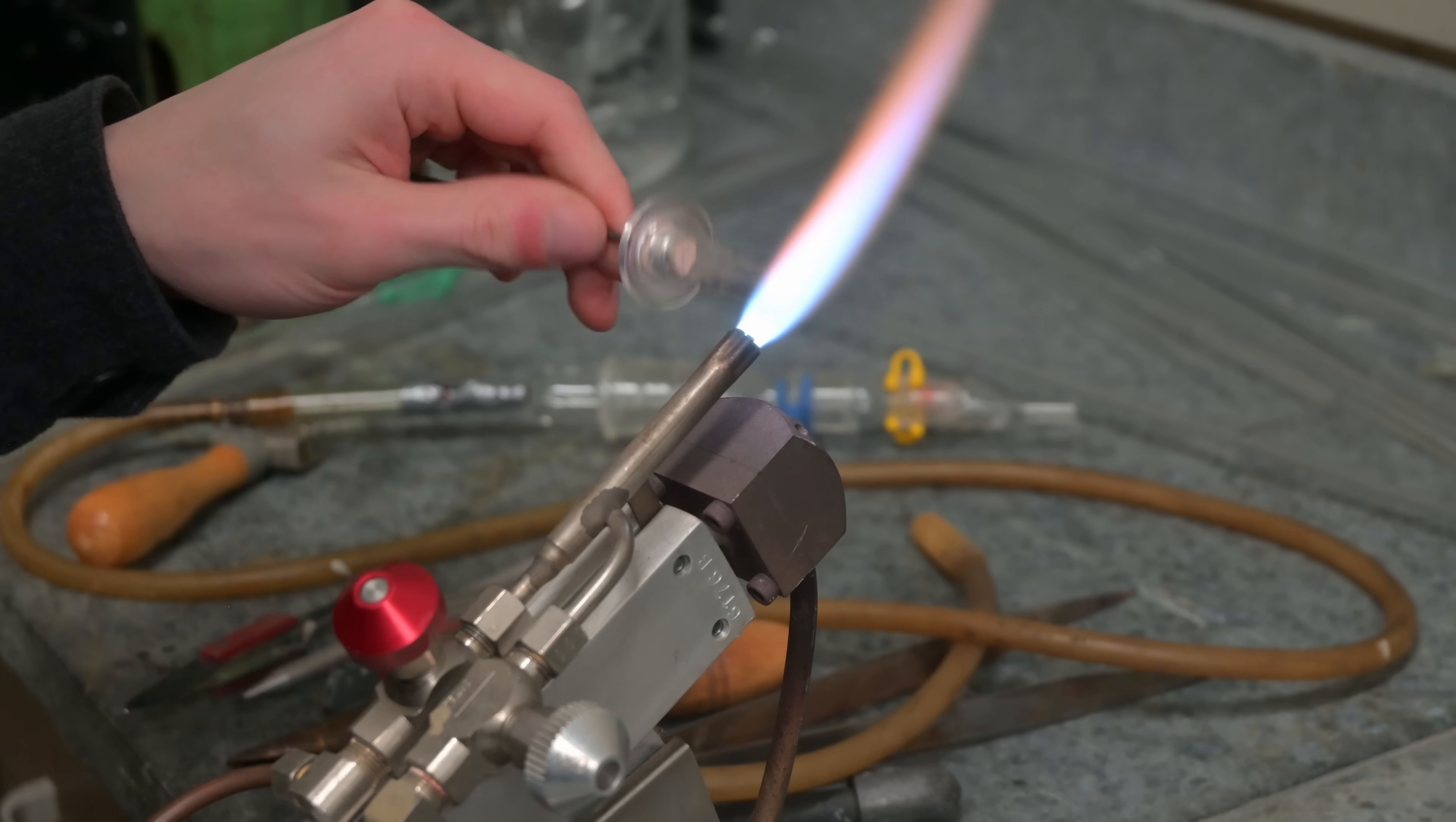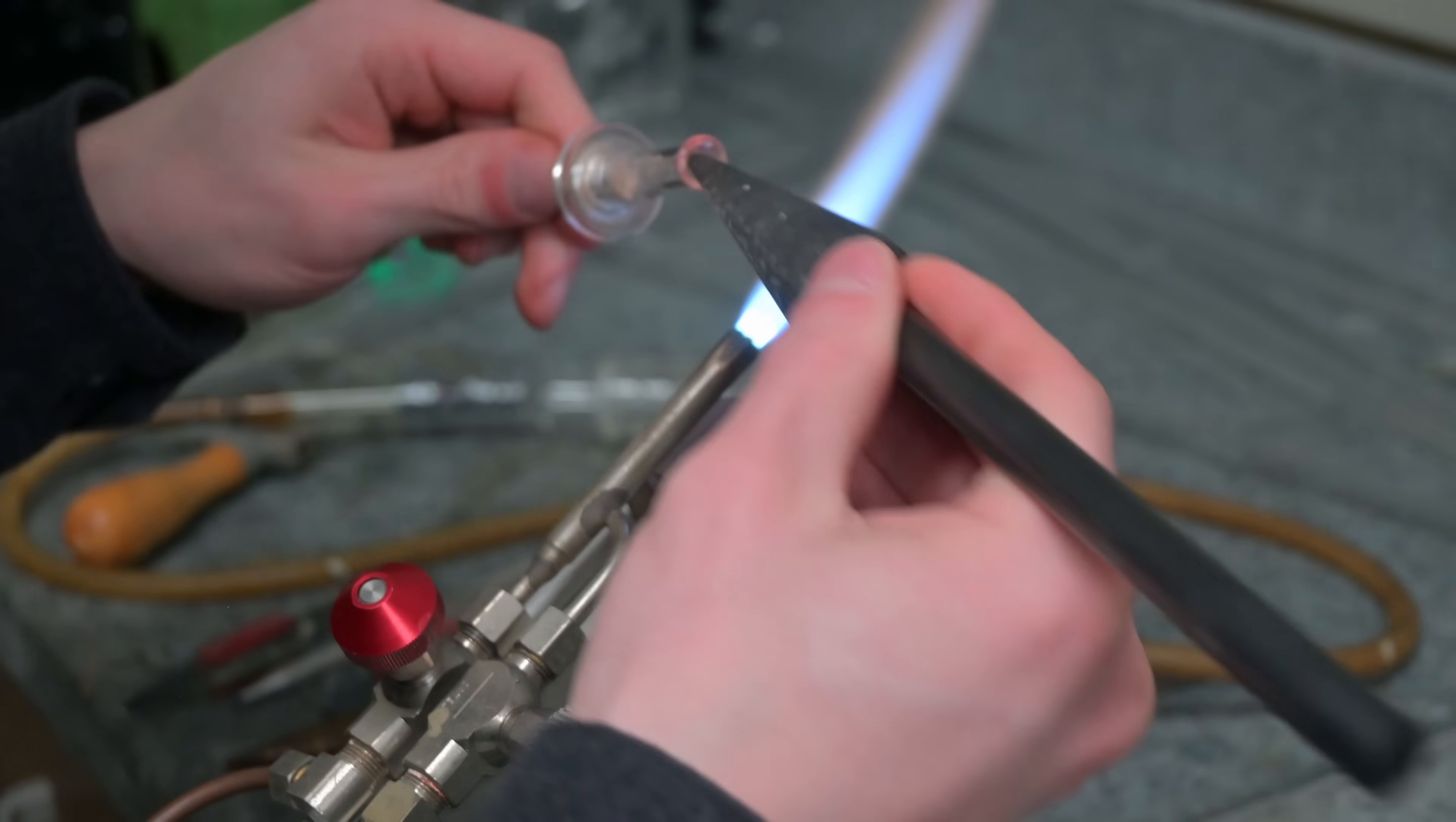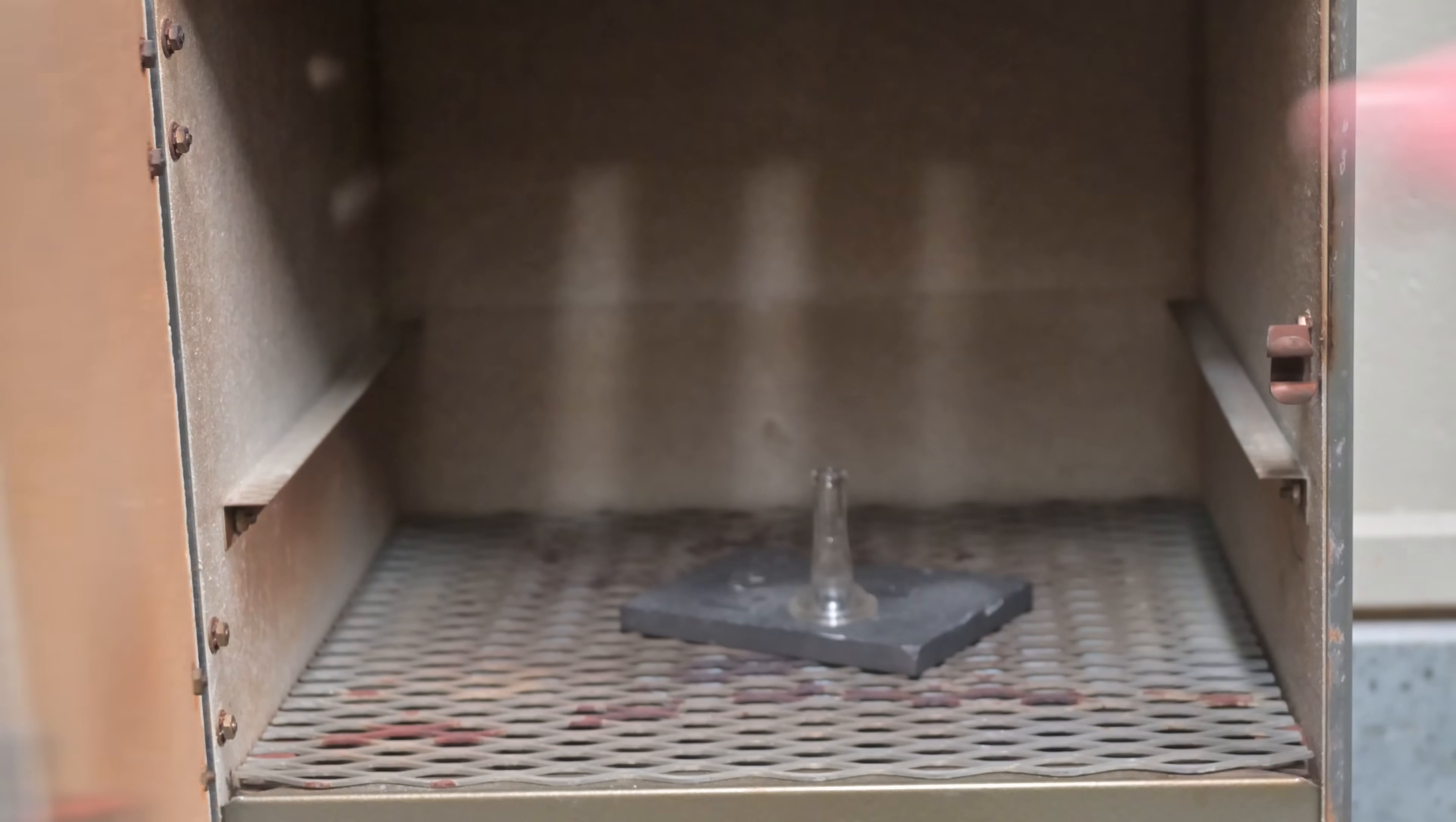Next, we make the thermometer adapter, which is the easiest to make of all. All I need to do is heat up the end of an o-ring joint section and flare it out so a thermometer adapter sleeve seals on it properly. After flaring it out, I throw it into the oven to cool down slowly.